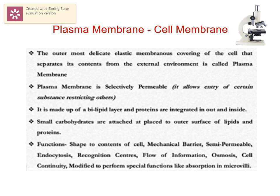The outermost delicate elastic membrane is known as the plasma membrane, cell membrane, or plasmalemma. It is selectively permeable or semi-permeable because it allows only certain molecules to pass through it. It is made up of lipids, proteins, and some carbohydrates. Functions of the cell membrane include giving shape to the contents of the cell, acting as a mechanical barrier to check entry of microorganisms, and helping in transport of materials into and out of the cell.